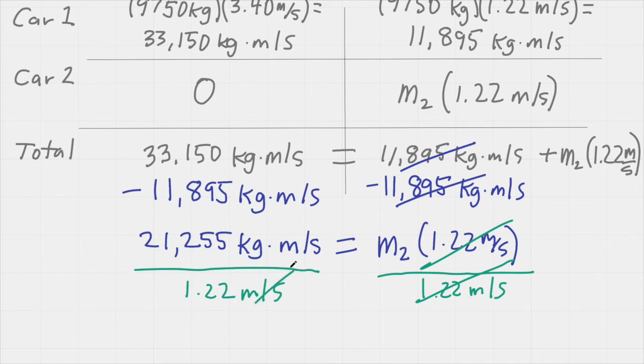Notice that the meters per second unit will cancel and my answer will come out in kilograms. When we divide 21,255 kilogram meters per second by 1.22 meters per second, we find that m2 is 17,422 kilograms.